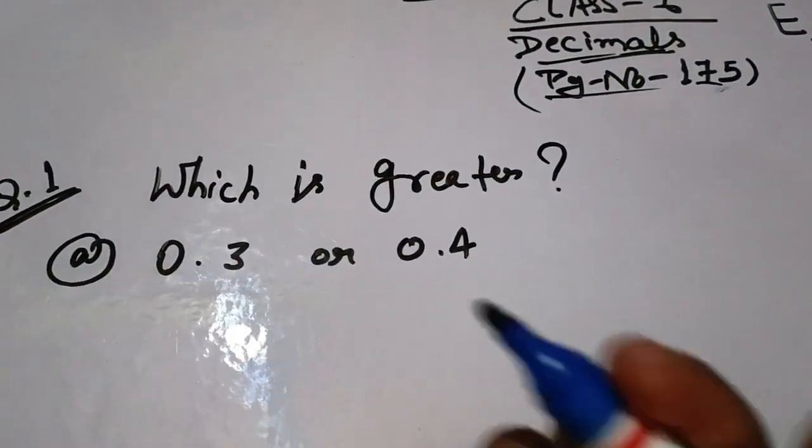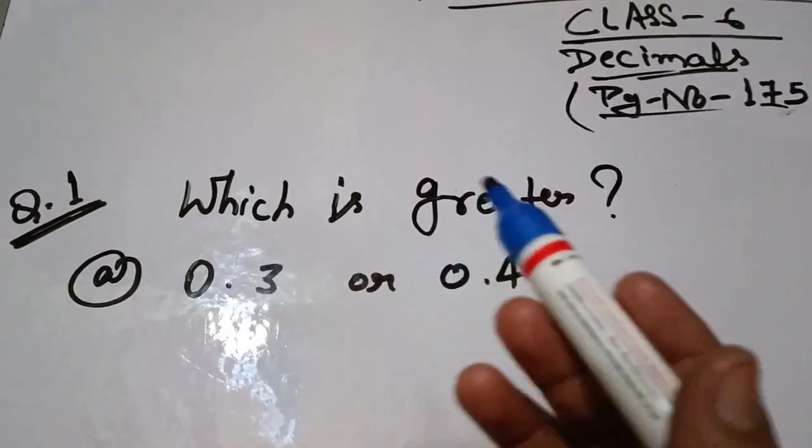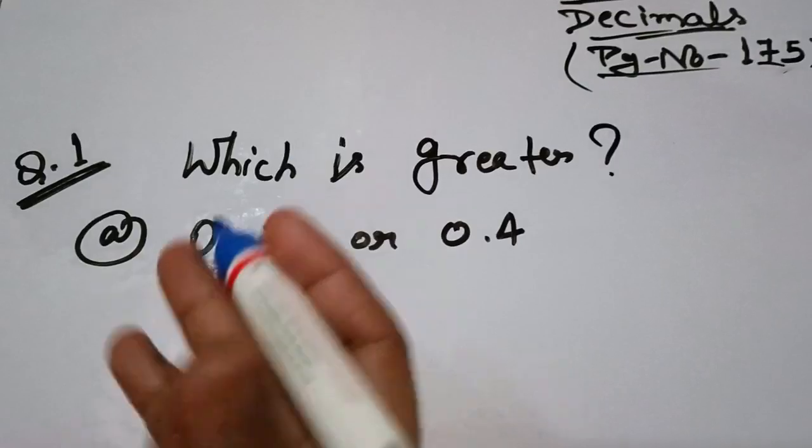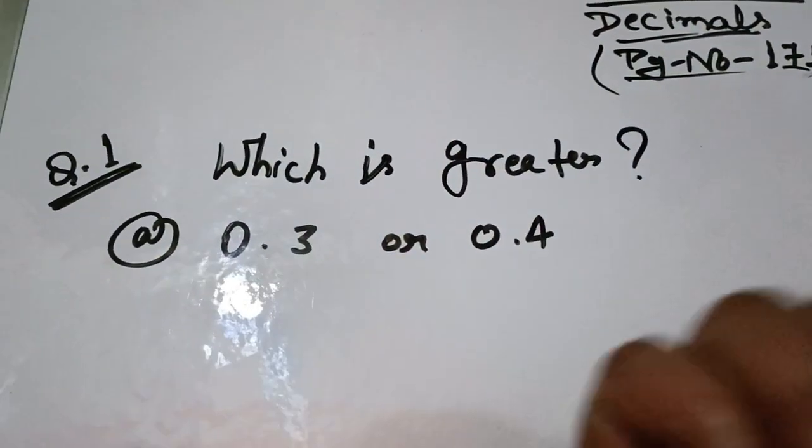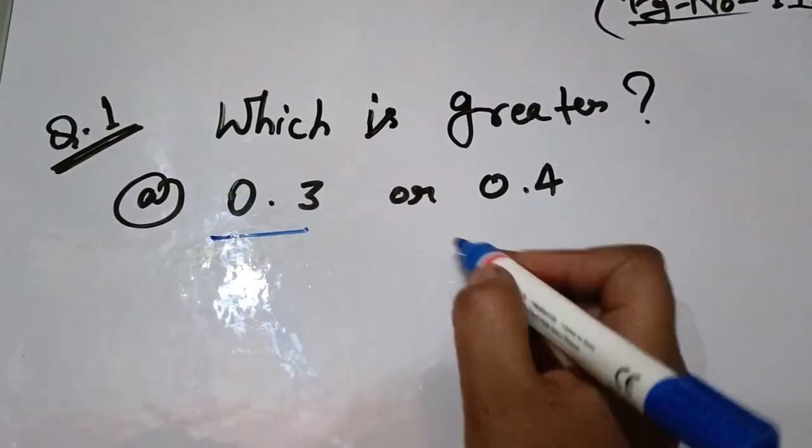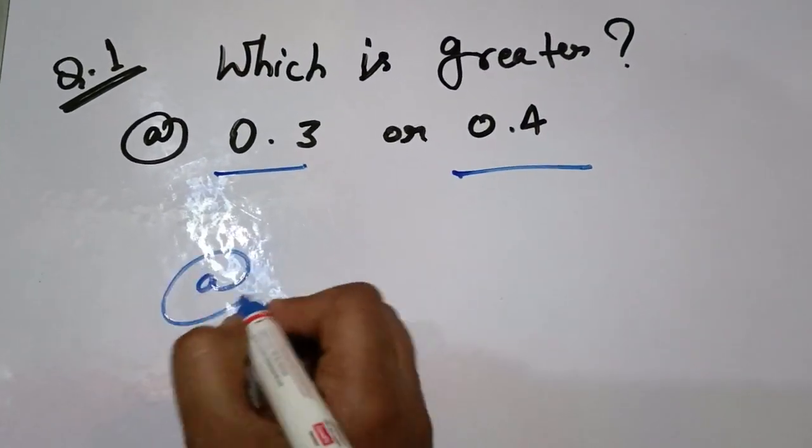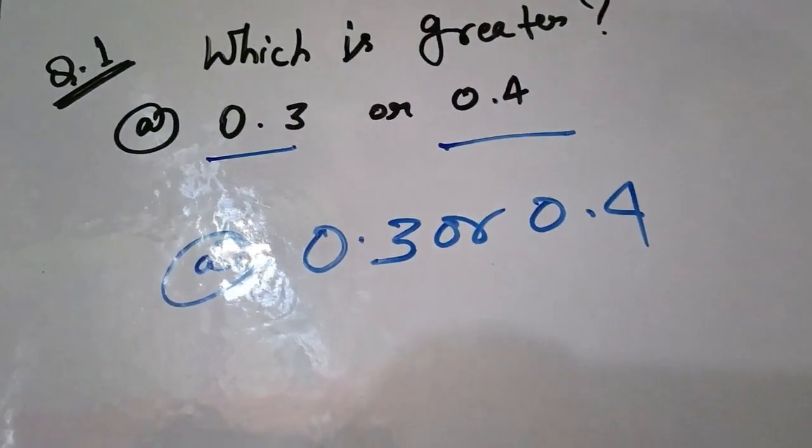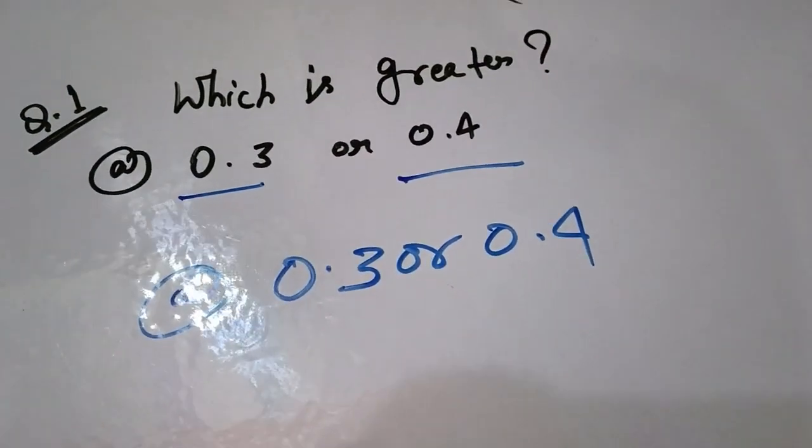In the decimals chapter, what has been given to you? Which is greater? We have to tell you which is greater. As you can see, the question is 0.3 or 0.4. The question is 0.3 and 0.4.